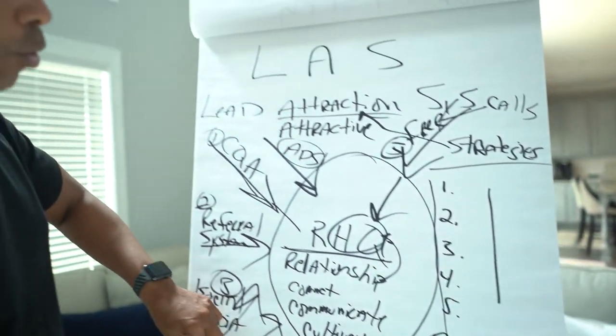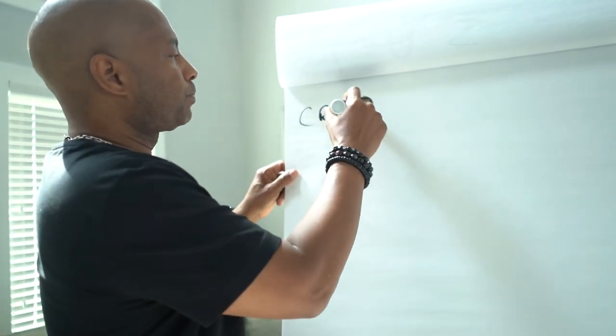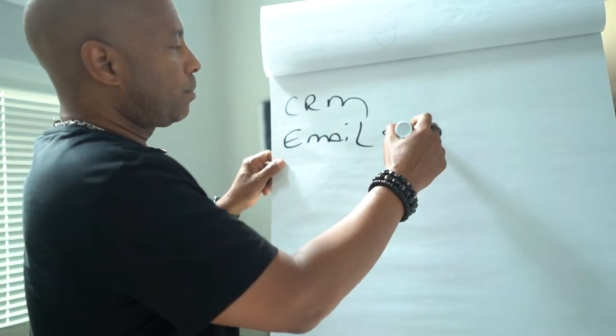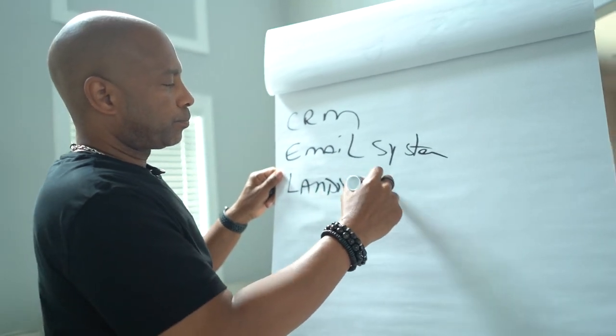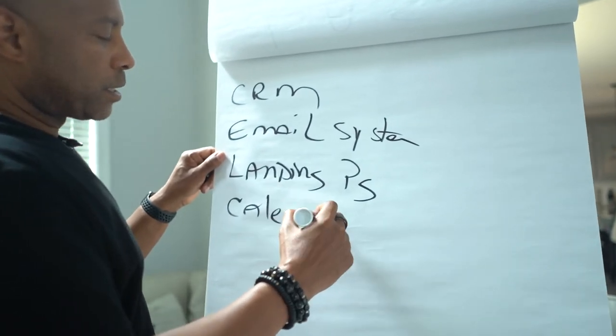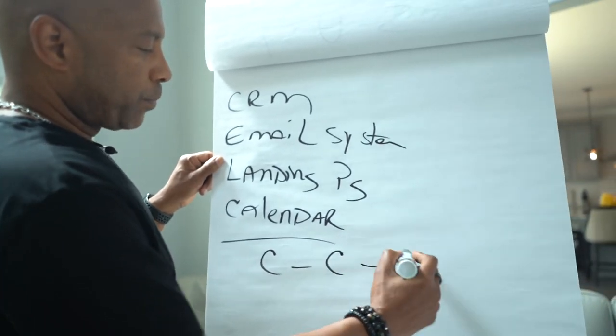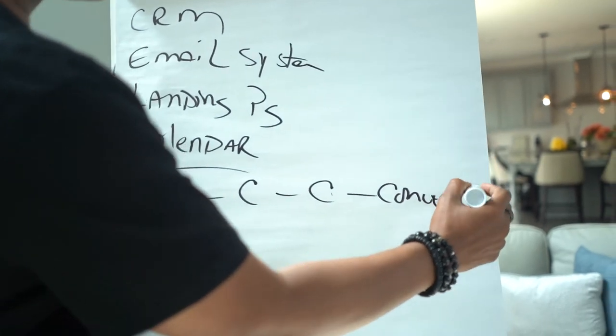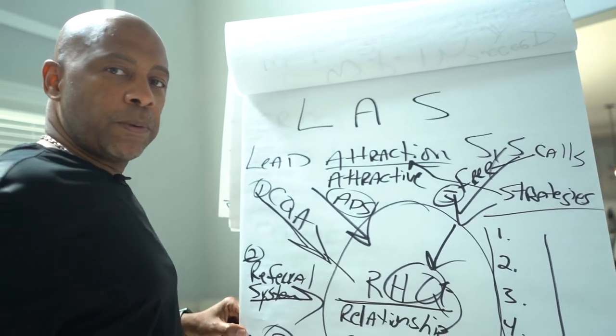Inside of your relationship headquarters, you have things like your CRM, your email system. It can be landing page, calendar system you use. This is a system where you can connect, communicate, cultivate, and ultimately convert. But everybody has to get attracted into your relationship headquarters.